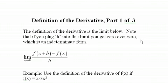The Definition of the Derivative, Part 1. The definition of the derivative is the limit below. Note that if you plug h into this limit, you get 0 over 0, which is an indeterminate form. So we can't really solve this.